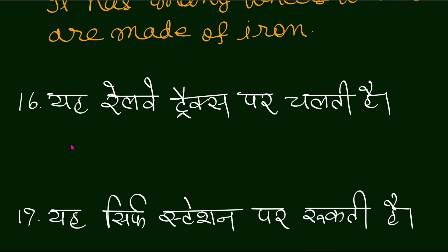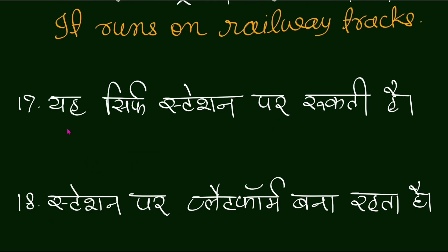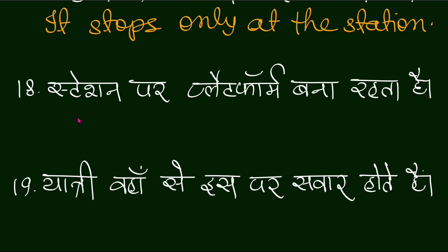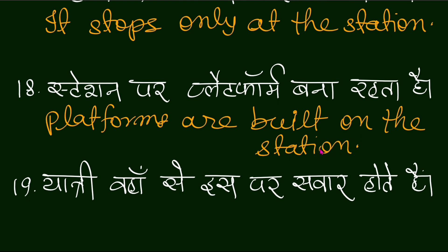Yeh railway tracks par chalati hai — simple present tense — 'It runs on railway tracks.' It stops only at the station. Station par platform bana rehta hai — 'Platforms are built on the station.'